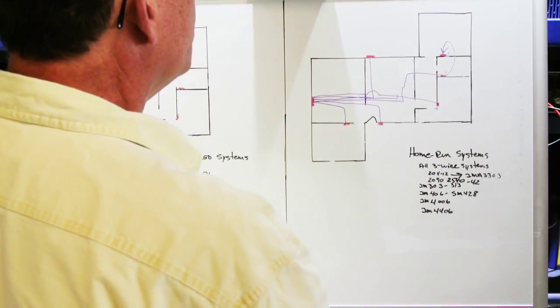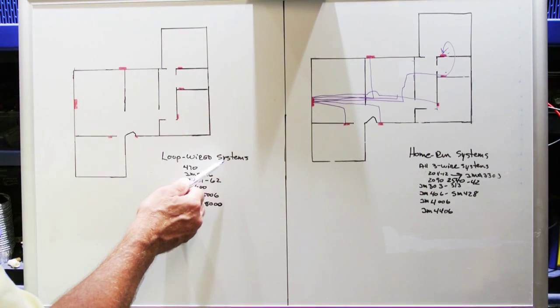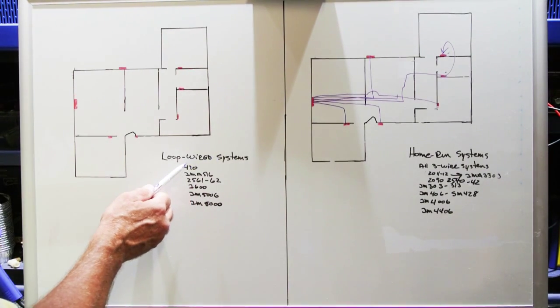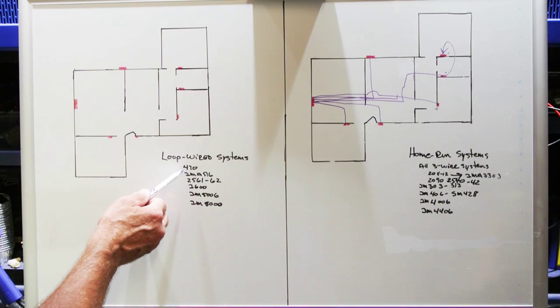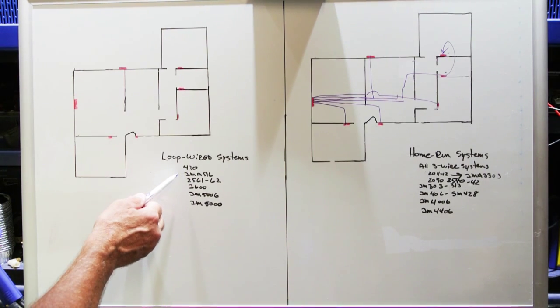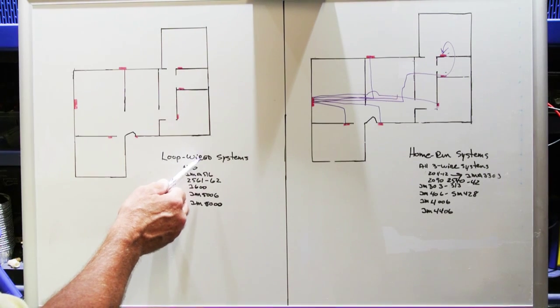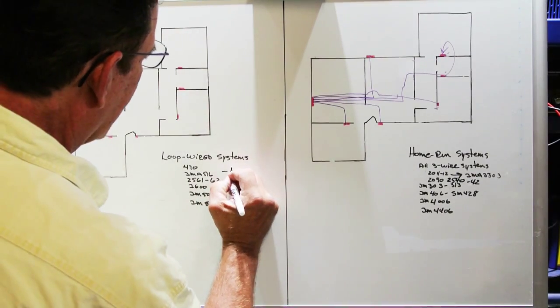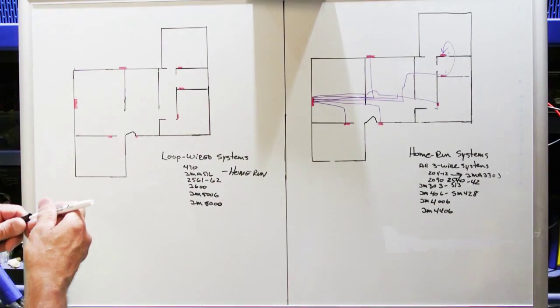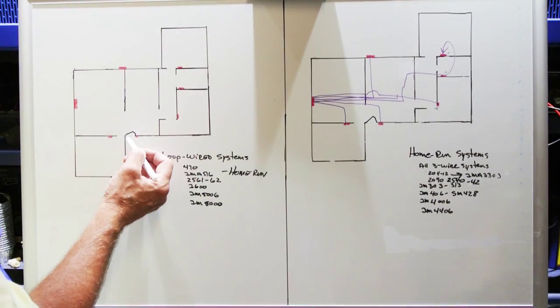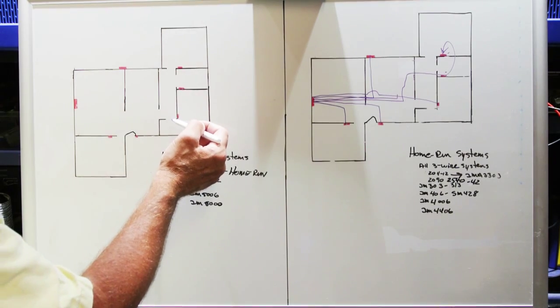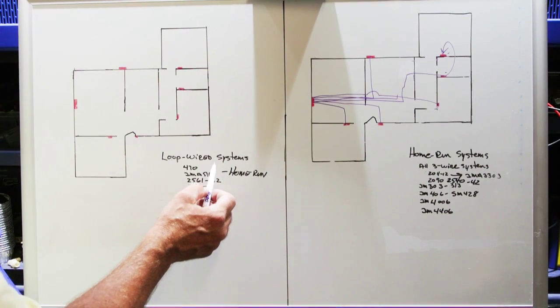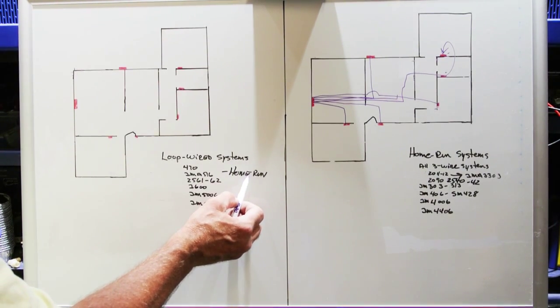Now let's look at loop wired systems. Loop wired systems are exactly what they say. Those speakers are all looped together on a single cable. I'm going to show you what a real world example of loop wiring would be like. One of the rules is loop wired system equipment that's designed to be loop wired can be loop wired, but also some of it can be home run.